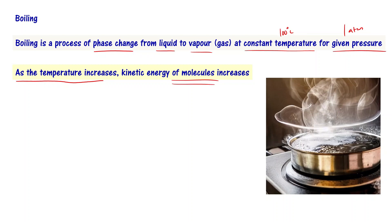The kinetic energy of the molecules is going to increase. Kinetic energy equals one-half mv-squared. So velocity is going to increase, kinetic energy is going to increase, and the velocity of the molecules is going to increase. Rapid boiling starts — you can see a bunch of molecules with significant velocity; they want to move out of the liquid.